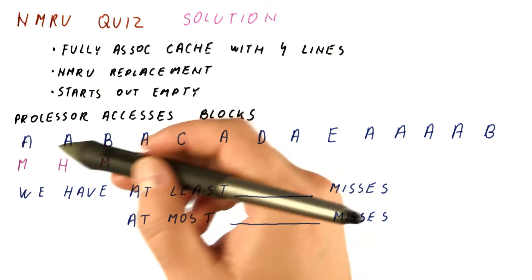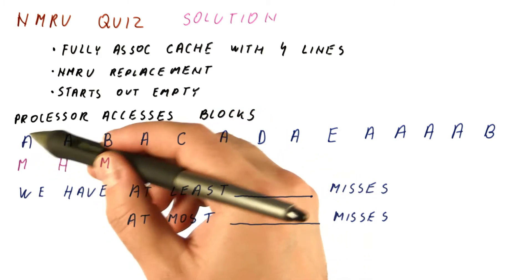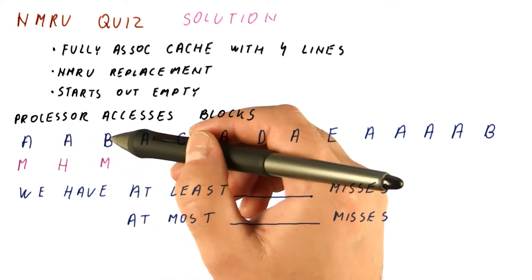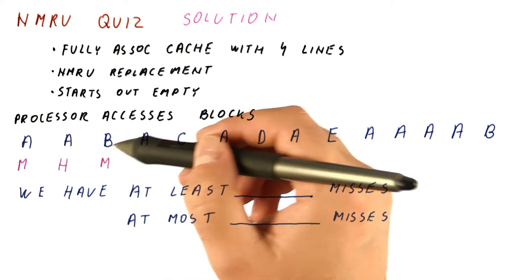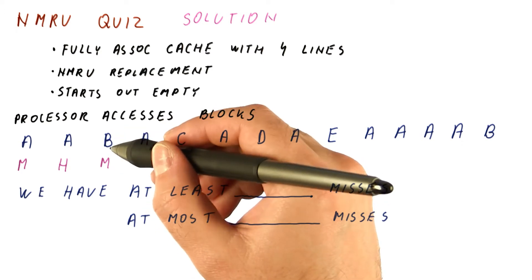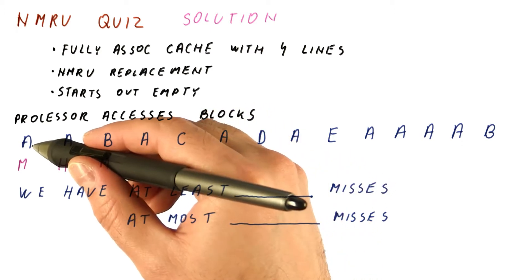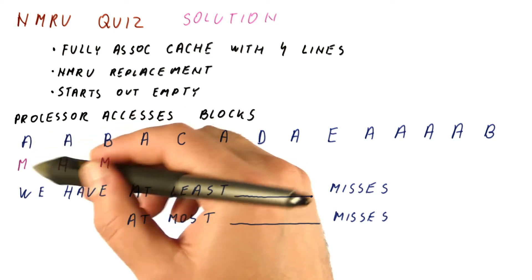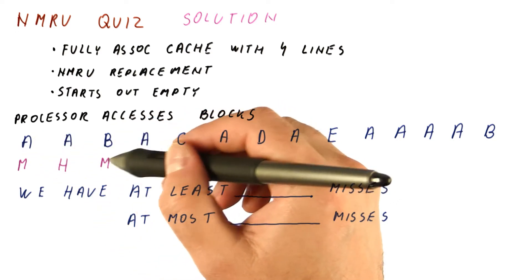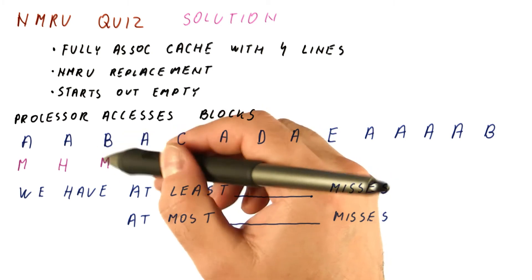We're going to put B in a separate place in the cache from where we put A because A is the most recently used block. So we will put B in one of the other three blocks. We definitely will put B in a line that doesn't contain A. We will not kick out A because A is the most recently used block. We will choose one of the other three lines to evict, to put B there.